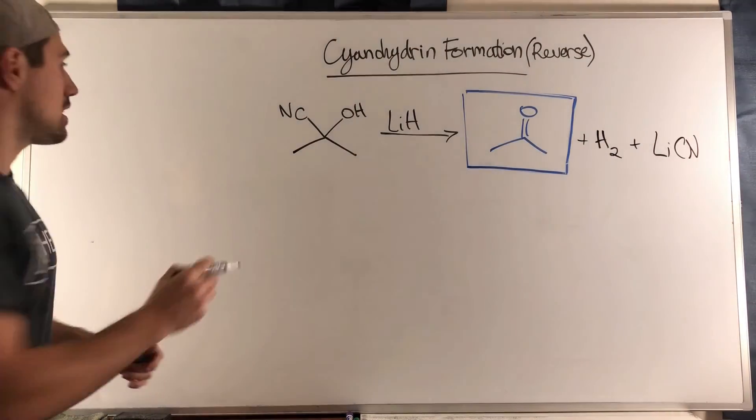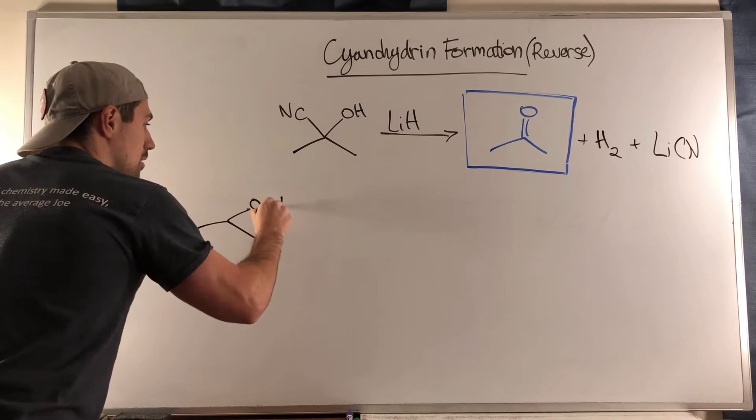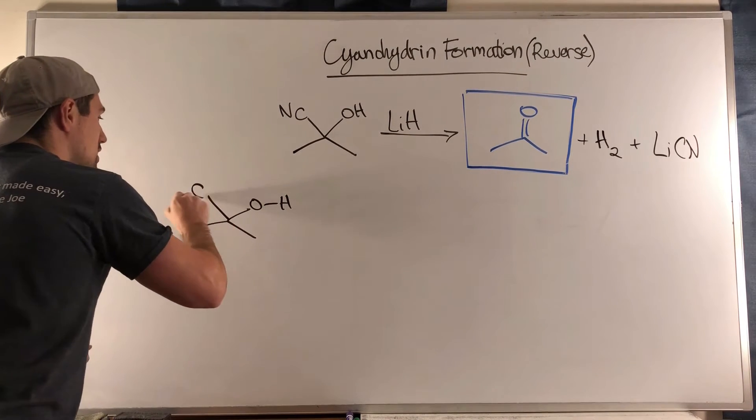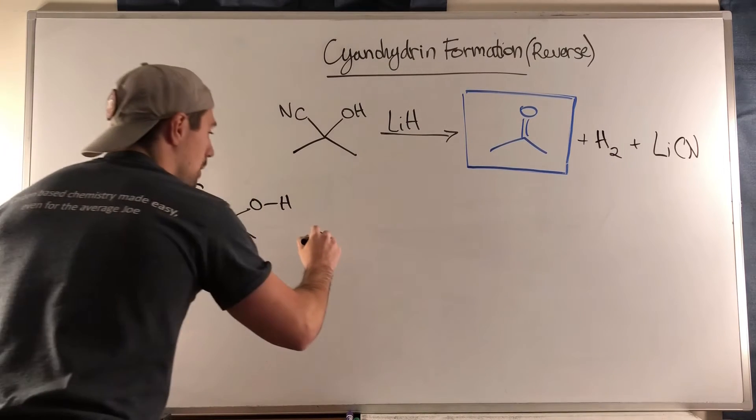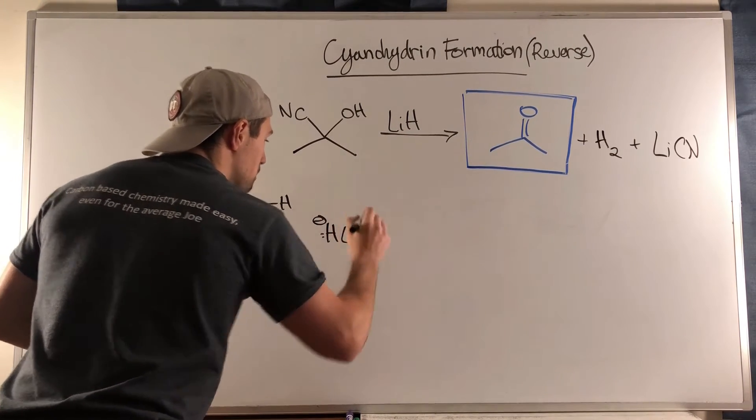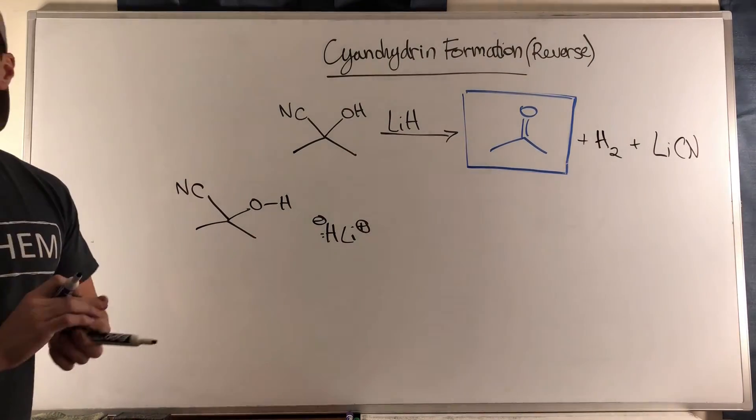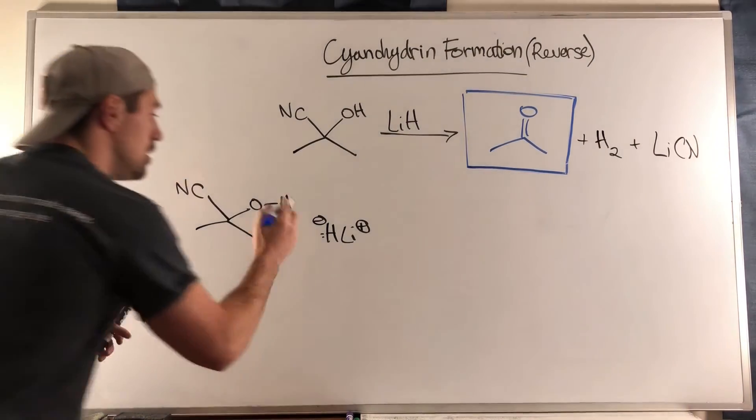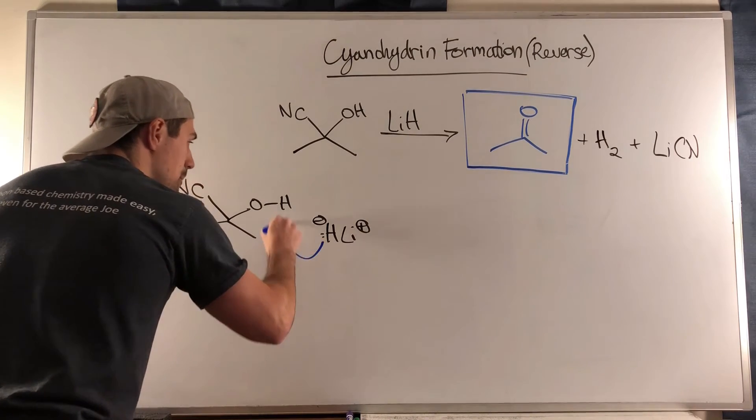How this works is, because we have a very wickedly strong base in H minus, in lithium hydride, what's going to happen is a very quick and favorable acid-base reaction between the hydride and the hydrogen on our alcohol within the cyanohydrin.